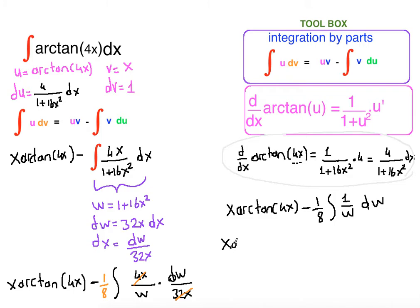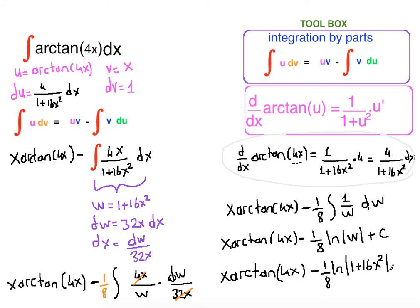So x arctangent of 4x minus 1/8. What is the antiderivative of 1 over w? It is ln w plus c. So we have to bring w back. What was w? It was 1 plus 16x squared. And let's clean up: x arctangent of 4x minus 1/8 ln of 1 plus 16x squared plus c.